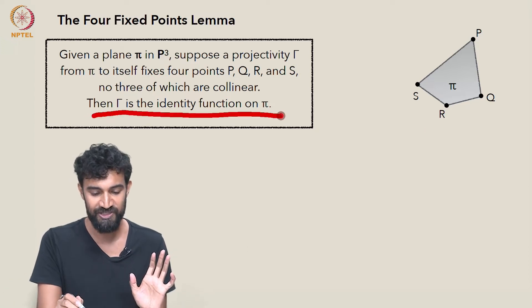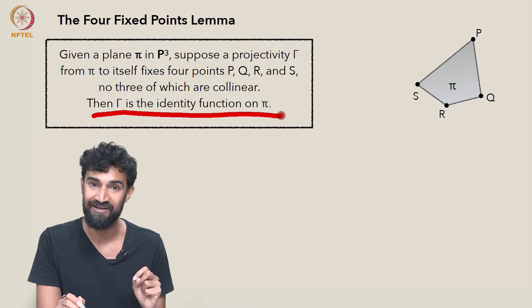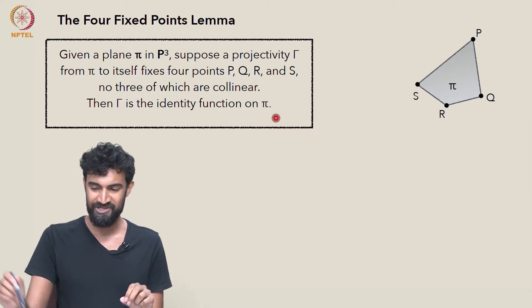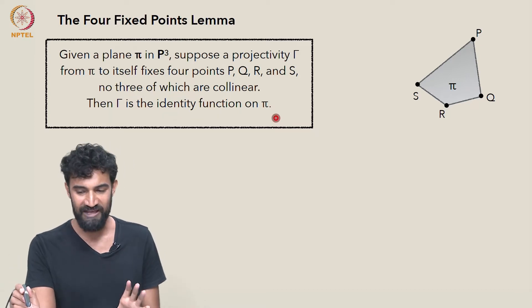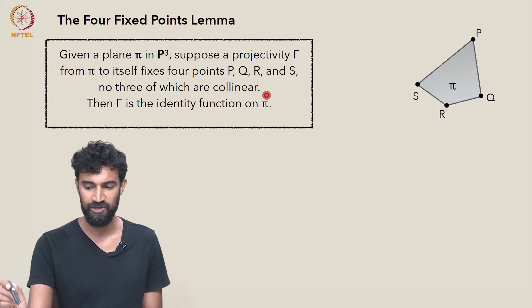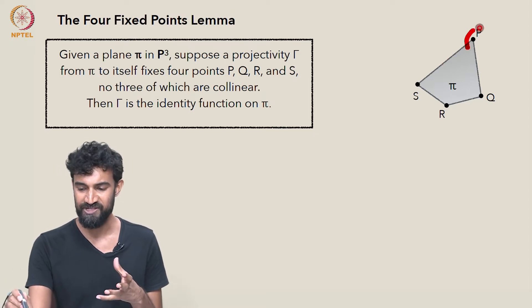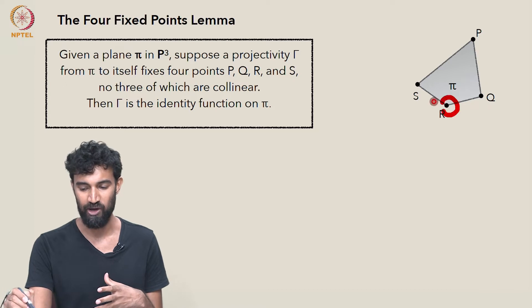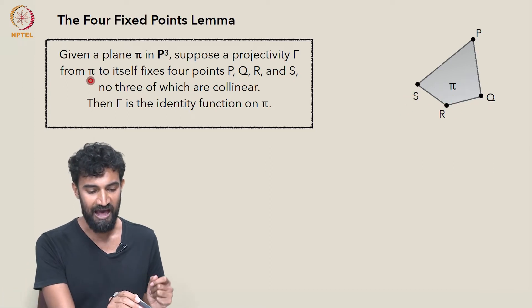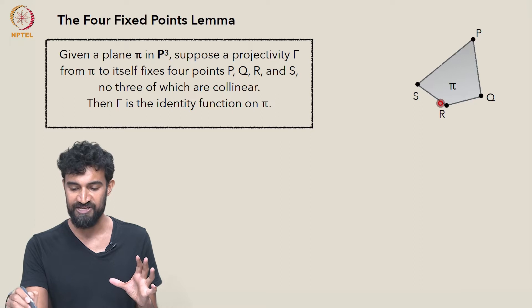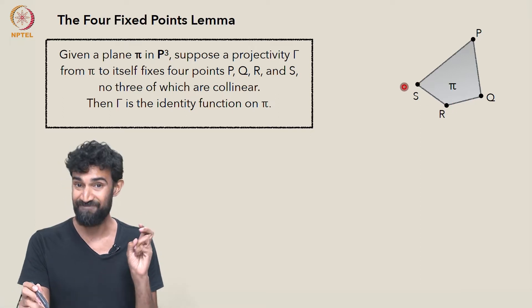Then γ is actually the identity function on π. In other words, if no three of these points are collinear, it means that these four points can be thought of as the vertices of a quadrilateral. So if γ fixes the vertices of a quadrilateral, then it fixes everything.